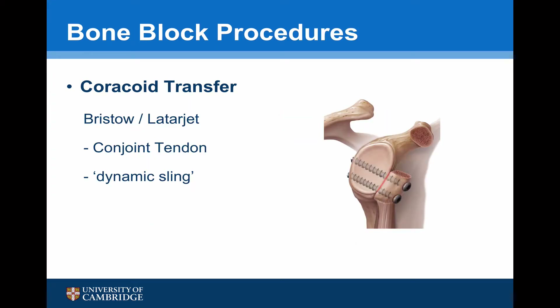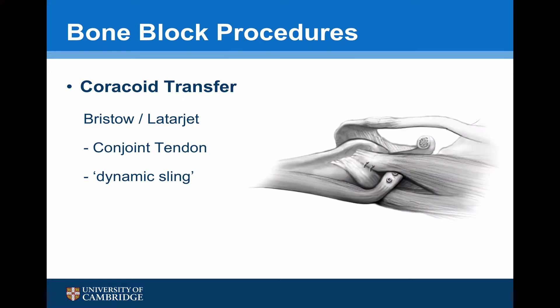There are two variations of the coracoid transfer: the Bristow procedure, which secures the coracoid tip end-on, and the Latarjet procedure, which secures the coracoid side-on. Both of these will extend the glenoid arc and also provide the dynamic sling effect from the conjoint tendon.